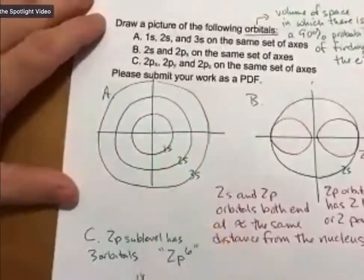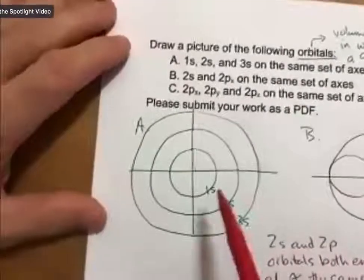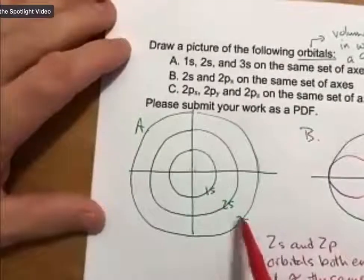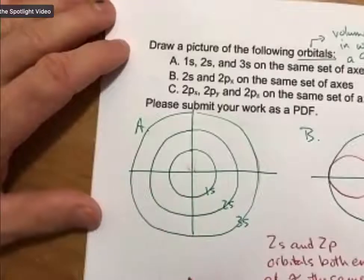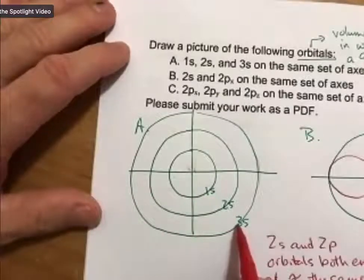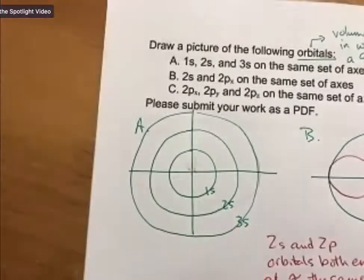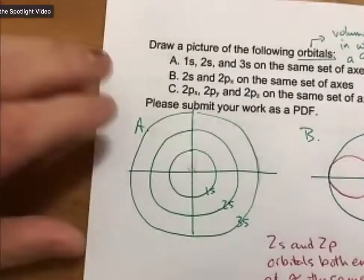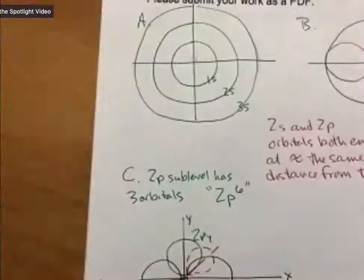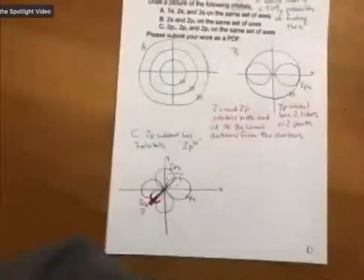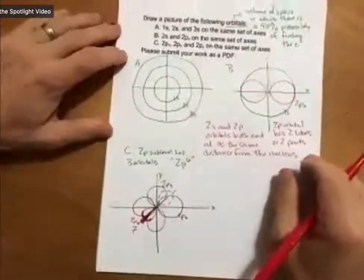So 3p orbitals, or 3px, would be balloons or half dumbbells that go all the way out to the edge of 3s. Because the idea is that when you have a 3s sublevel, that 3p fits inside it. In fact, 3d fits inside 3s as well, like 3s defines the largest shape for the n equals 3 principal energy level.